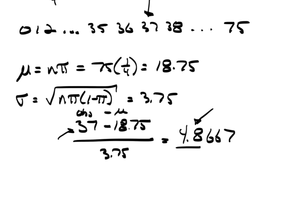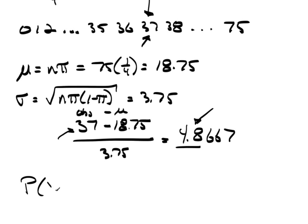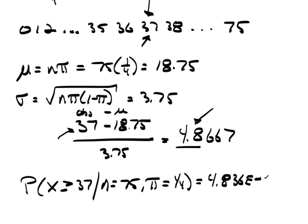Now let's take another approach to this. We observed 37. I don't really care what the probability of 37 is. More realistically, I want to know what the probability of X being greater than or equal to 37 given N equals 75, pi equals one fourth. Now when I find this probability in TC stats, what I ended up with is 4.836 E negative 06.